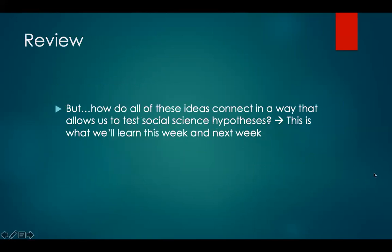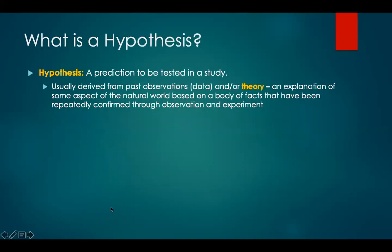But how do all of these ideas connect in a way that allows us to test social science hypotheses? That's what we'll learn this week and next week. To start out, what is a hypothesis? A hypothesis is a prediction to be tested in a study. It's usually derived from past observations, or data, and or theory, which is an explanation of some aspect of the natural world based on a body of facts that have been repeatedly confirmed through observation and experiment.